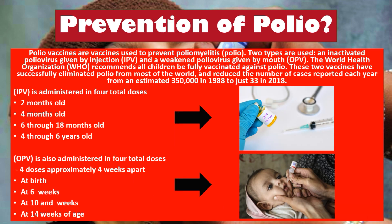For prevention, polio vaccines are used to prevent poliomyelitis. There are two types: an inactivated poliovirus vaccine (IPV) given by injection, and a weakened poliovirus vaccine (OPV) given orally. The WHO recommends all children be fully vaccinated against polio. The IPV is administered in four doses: at two months, four months, six to eighteen months, and four to six years. The OPV is also given in four doses approximately four weeks apart, starting at birth, then at six weeks, ten weeks, and fourteen weeks.